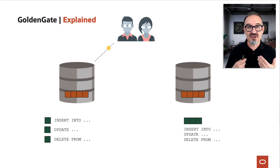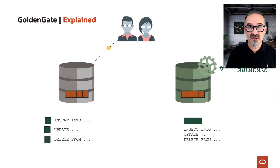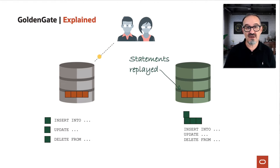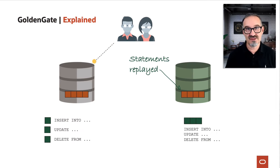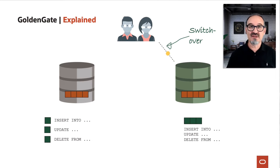This information gets shipped over. You may upgrade the database if it's a copy, or it has already been upgraded implicitly by importing into the target version. And once you're done, you replay the statements. GoldenGate knows from where to replay, so everything is done the right way. And then you switch over.